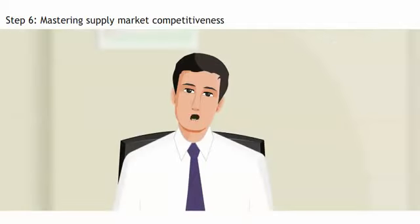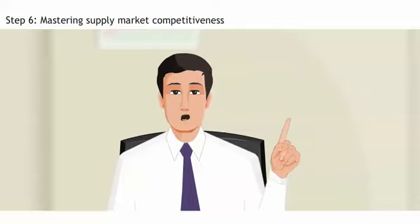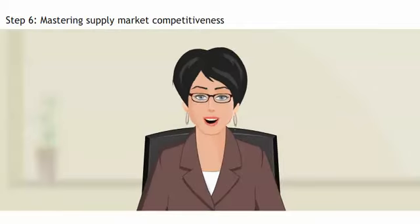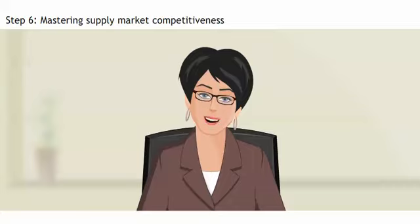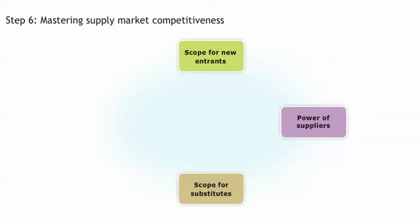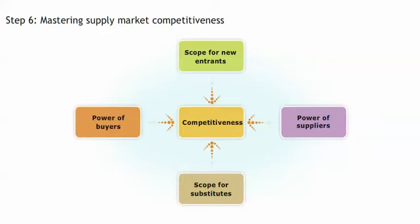How do the five forces help in analyzing a category? The five forces are scope for new entrants, power of suppliers, scope for substitutes, and power of buyers, with competitiveness in the middle.